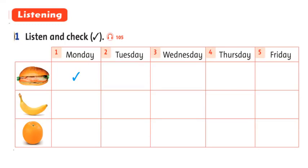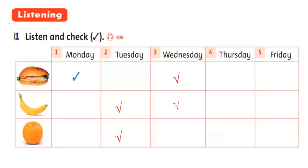Listen and check again. 1. It's Monday. Today I have a sandwich. 2. It's Tuesday. I don't have a sandwich, but I have an orange and a banana. 3. Today is Wednesday. I have a sandwich and a banana, but I don't have an orange. 4. Today is Thursday, and I'm hungry. I have a sandwich, a banana, and an orange. 5. It's Friday today. I don't have a banana, but I have a sandwich and an orange. Very good, student! Now let's check the answer in your book, please.